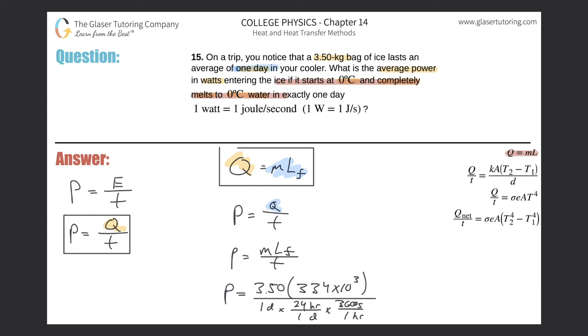So let's do the math: 3.5 times 334 times 10 to the third, divided by in parentheses 24 times 3600, and voila. So the power here is going to be about 13.5 - three sig figs, yeah that's fine - 13.5 watts, aka joules per second.